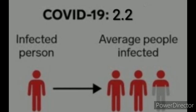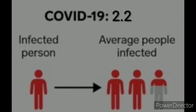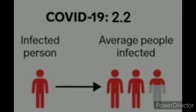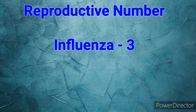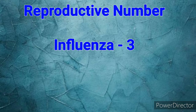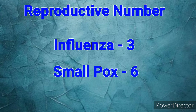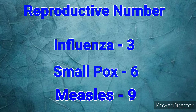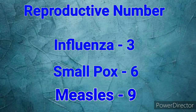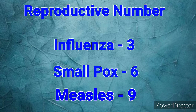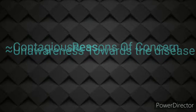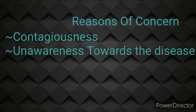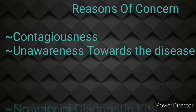The reproductive number is the number of persons affected by an infected person. The higher the number, the more infectious or contagious a disease is. Interestingly, the reproductive number of common cold or influenza is 3, of smallpox it is 6, and of measles it is 9. So even having a lesser reproductive number than influenza, smallpox, and measles — what makes COVID-19 of more concern? The reason is that contagiousness of the disease is the main factor, but unawareness towards the disease is of specific concern.